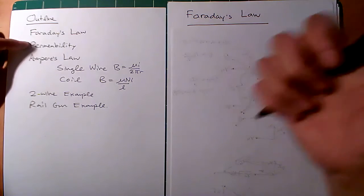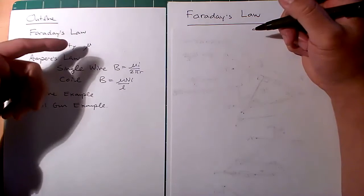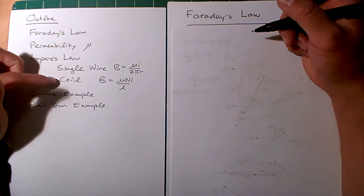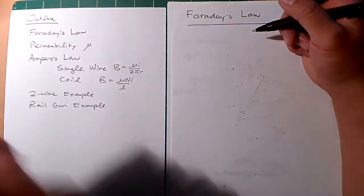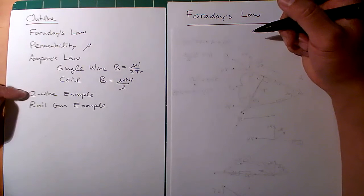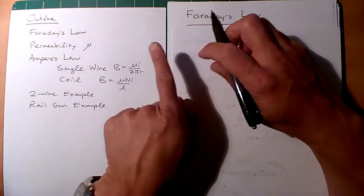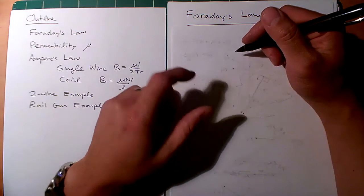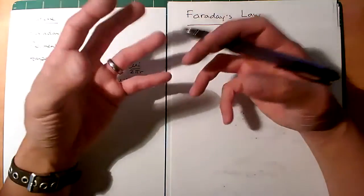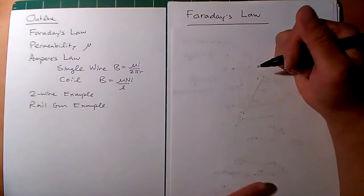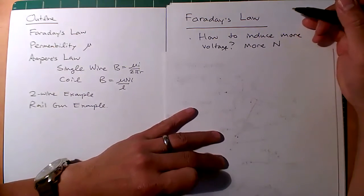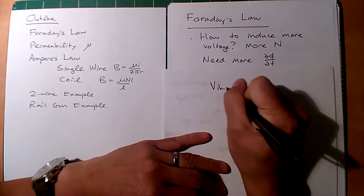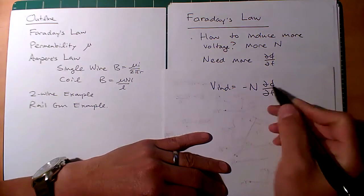We want to look at permeability — that Greek letter mu — the material constant that allows us to transfer flux. We're going to look at Ampere's Law and two specific situations: the single wire and the coil. These are two useful equations to memorize, and then we'll look at two examples. Let's start with our deep dive into Faraday's Law. The equation is V induced equals minus N dΦ/dt. That's the equation we're going to use in class.